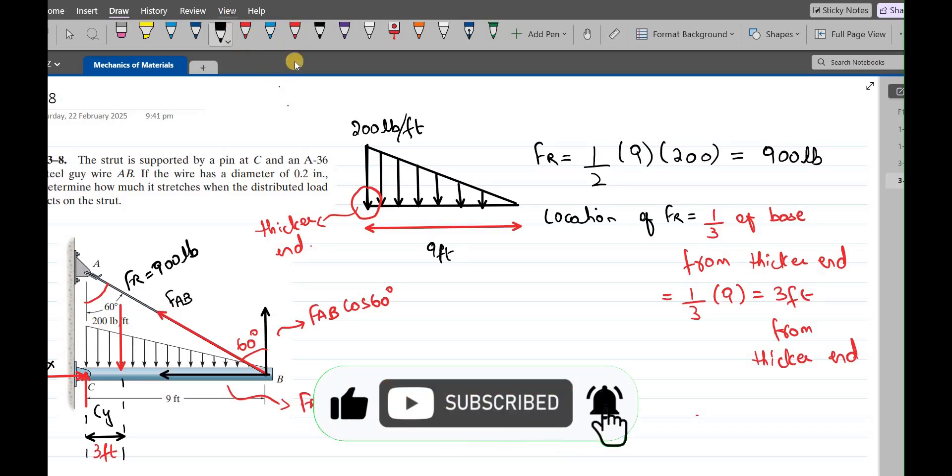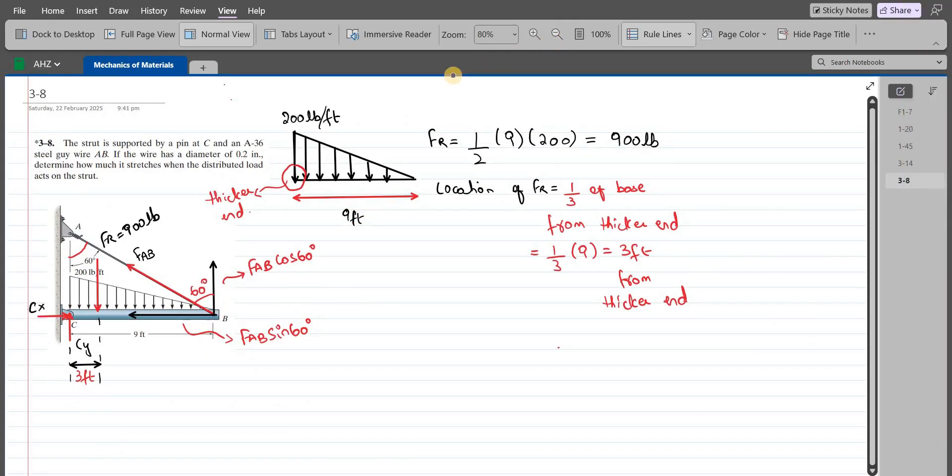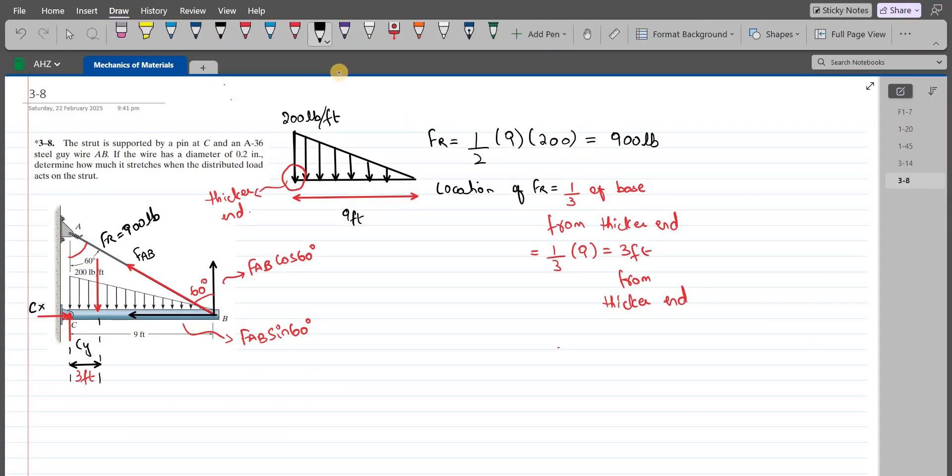Now we can use our equations of equilibrium to find the magnitude of FAB force. My first equation would be summation of moments at point C equals zero. I am considering counterclockwise direction as positive. The line of action of CX and CY are passing through point C, so they don't have any moment with respect to point C. The moment produced by the resultant force is negative 900 times 3 feet.